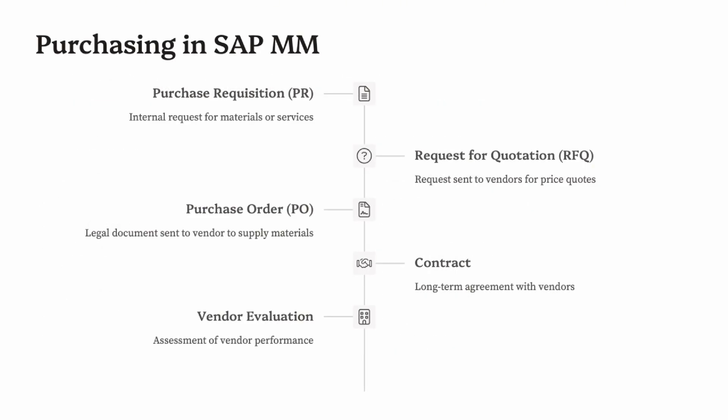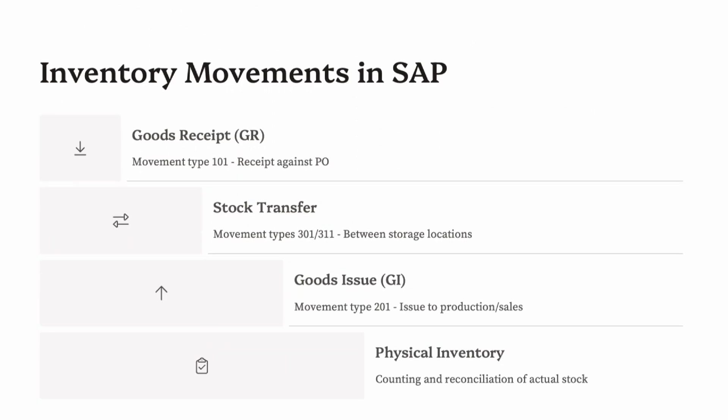Second, Purchasing: this component manages procurement activities. A Purchase Requisition (PR) is an internal request to purchase materials or services. A Request for Quotation (RFQ) is sent to vendors to request pricing and terms. A Purchase Order (PO) is a legal document sent to vendors confirming purchase terms. Contracts and Scheduling Agreements are long-term agreements used for repeated procurement.